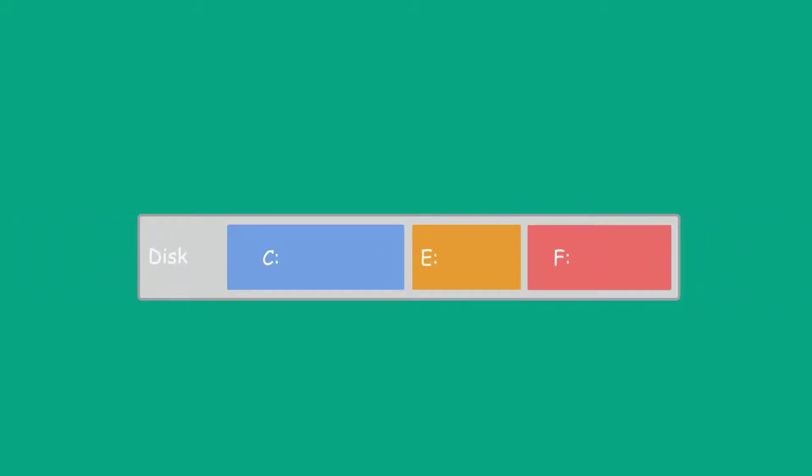There is not any unallocated space adjacent to the insufficient C partition and the next E partition, but another partition F on the same hard disk has a large number of free spaces.